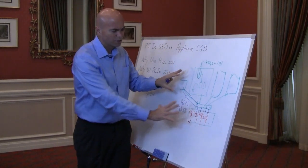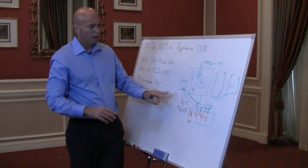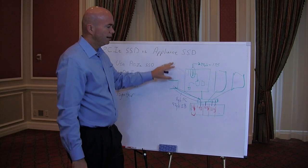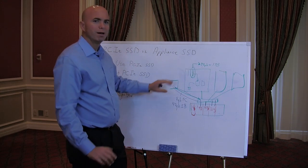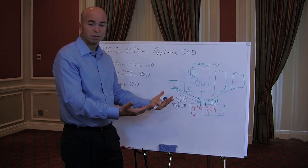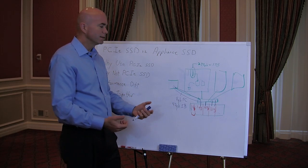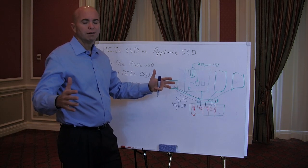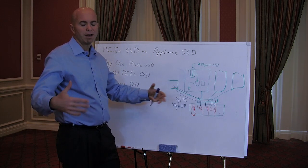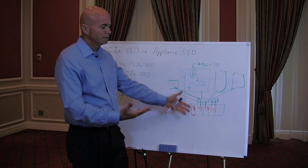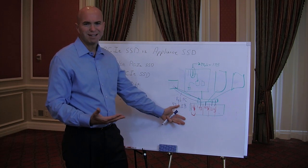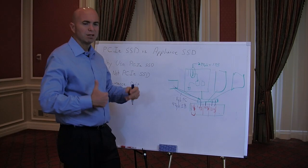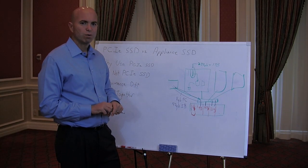So it really comes down to sort of where are you in the storage buying cycle? What does your network infrastructure both now and in the future look like? And then where is your performance problem? Again, if it's isolated to a few servers, there's clearly some value in PCIe SSD. If it's a broad situation like you have 150 virtualized hosts that are hosting virtual machines, then maybe a more appliance approach makes sense. So you really want to have the option to do either or both. And it just depends on where you are in that cycle as to which one to get.